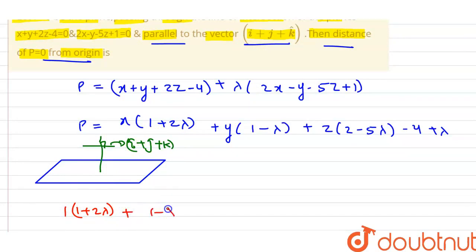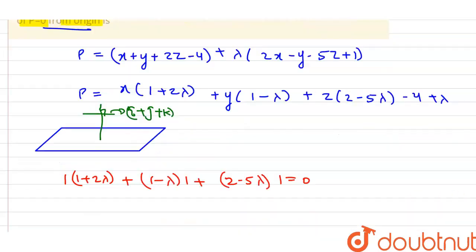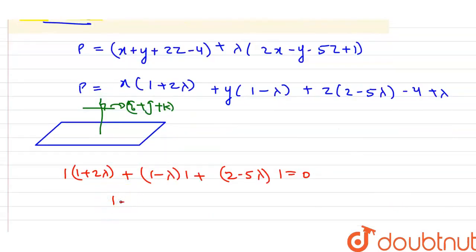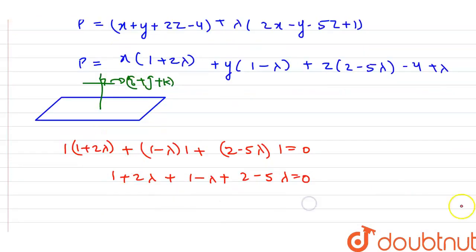1 plus 2 lambda into 1 plus 1 minus lambda into 1 plus 2 minus 5 lambda into 1. This is equal to 0. So the value is 1 plus 2 lambda plus 1 minus lambda plus 2 minus 5 lambda is equal to 0.